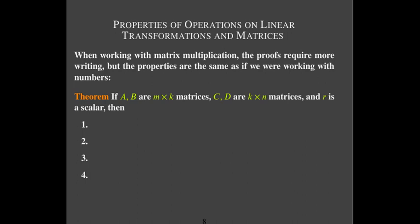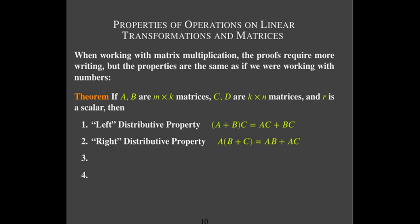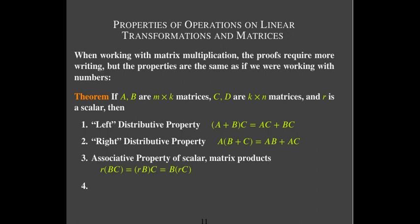With matrix multiplication, we do have some properties which are the same as with numbers. We have a left distributive property and a right distributive property — and we're going to see that it really does matter with matrices whether you're multiplying on the left or on the right. There's also an associative property of matrix products with a scalar and an associative property of matrix products, so the grouping results in the same answer.